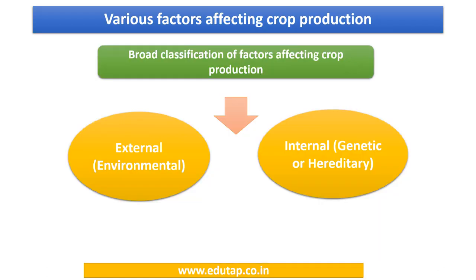Here we shall see a broad classification of the factors that affect crop production. The broad factors are external, that is environmental factors, and internal, which are nothing but genetic or hereditary factors. In the coming sections, we shall look at the classification of the external factors.